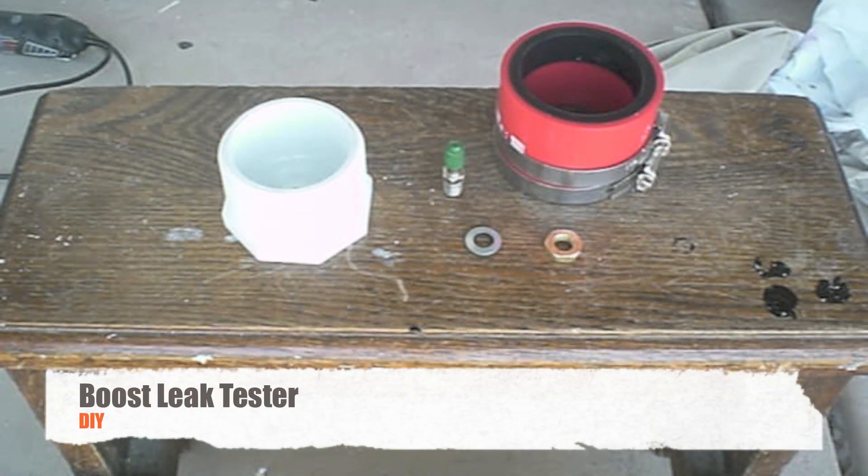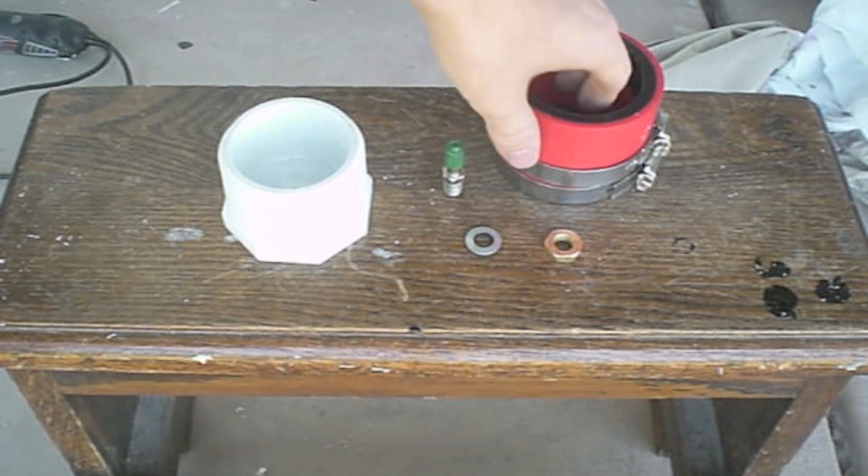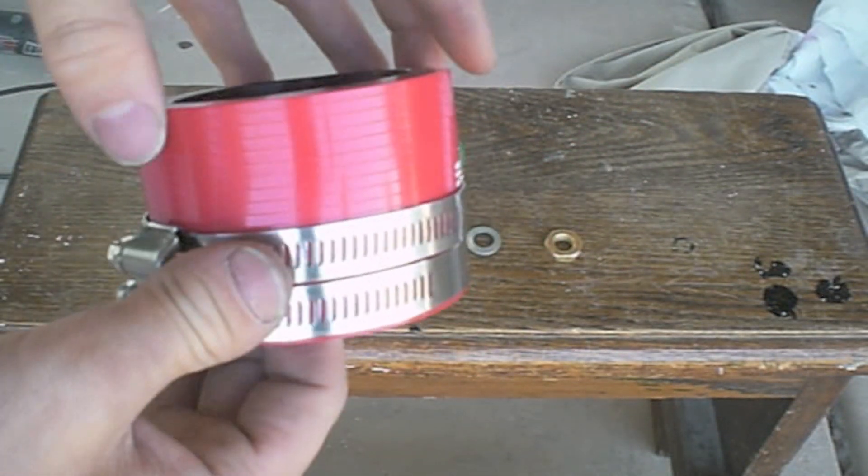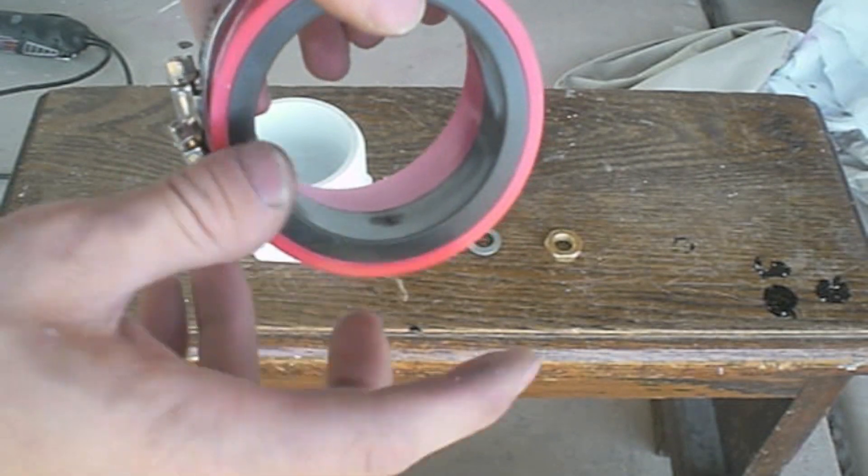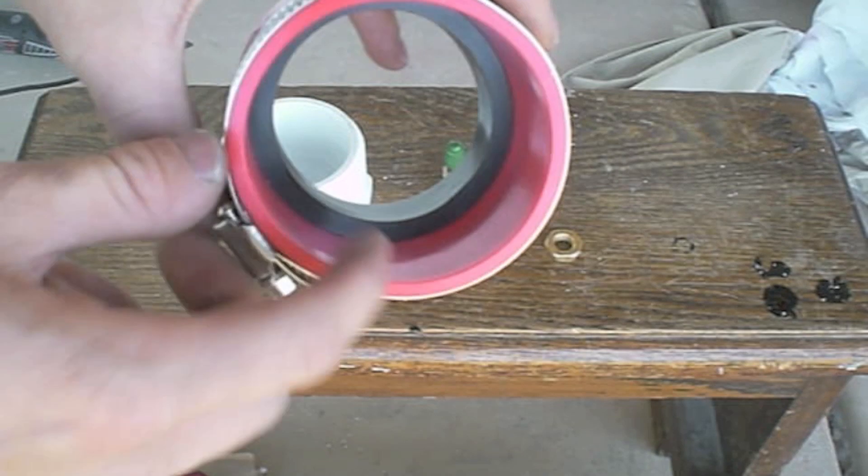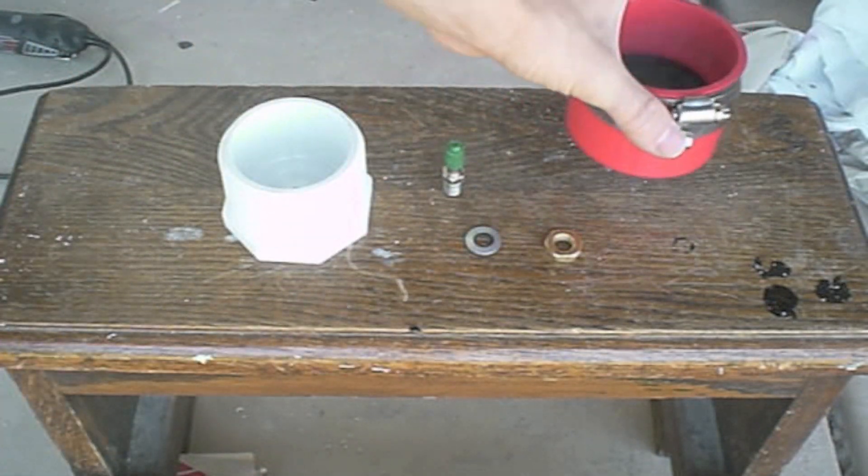Some things that you'll need for making a boost leak detector is a silicone hose. I got this for $7.99 at AutoZone. What's nice about this is it's got a 2.5 inch adapter and you can also use it for 3 inches. So that's the first thing you'll need.